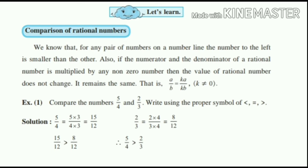So, 15 by 12 is greater than 8 by 12. So, forget about the denominator. What you are thinking? 15 is greater than 8. That is correct. So, 5 by 4 is greater than 2 by 3. Like that, we have to compare all the numbers in point 2.